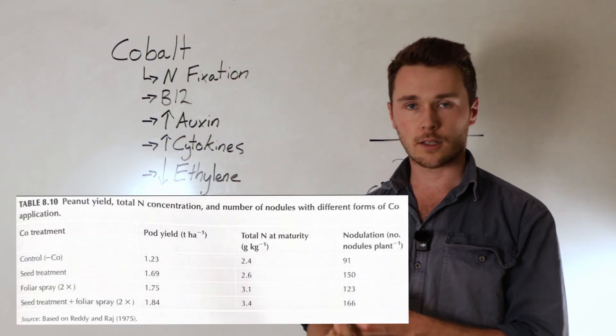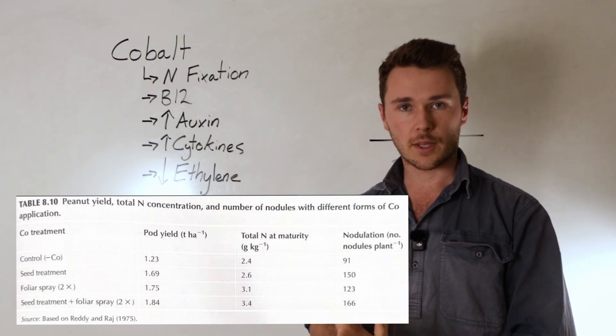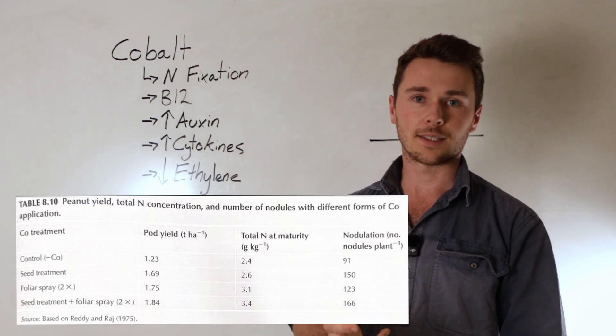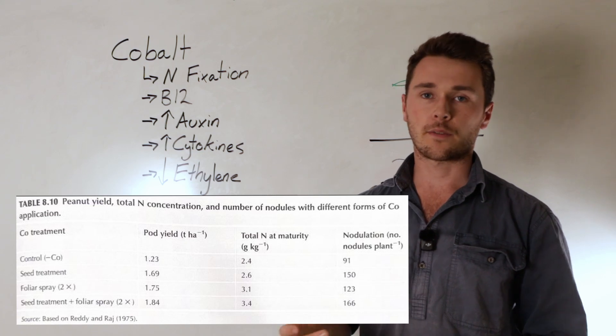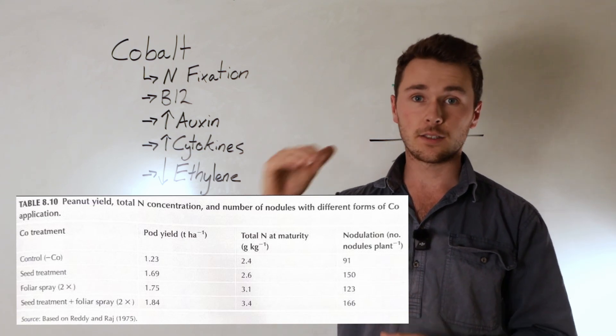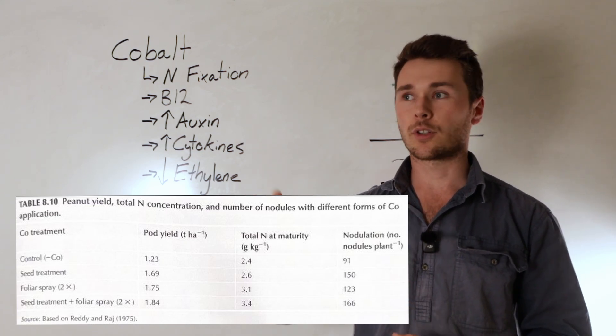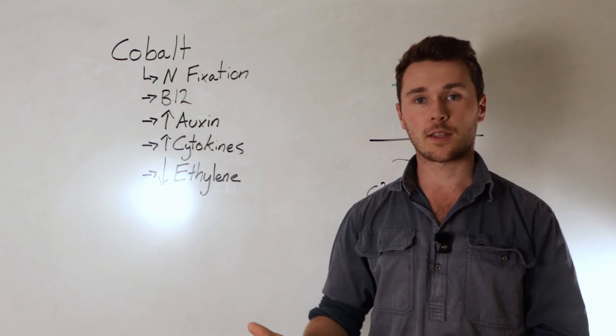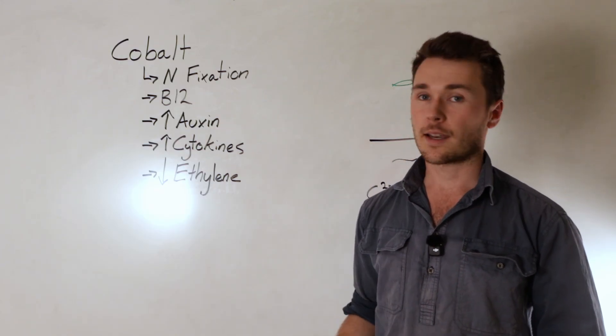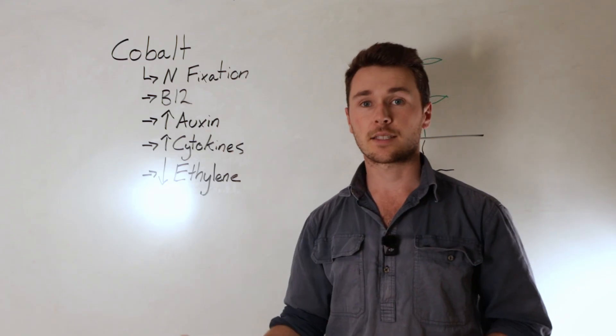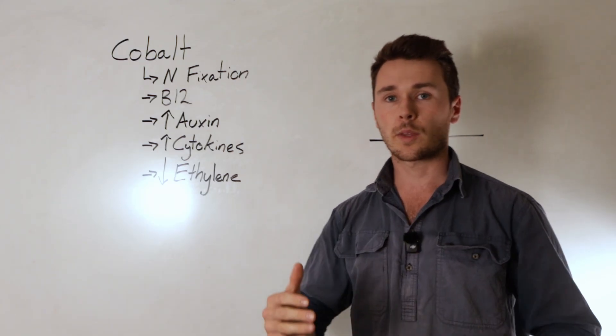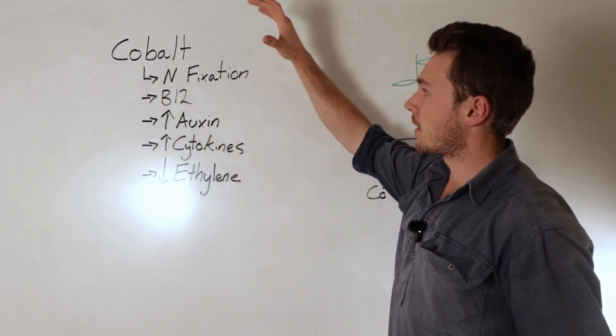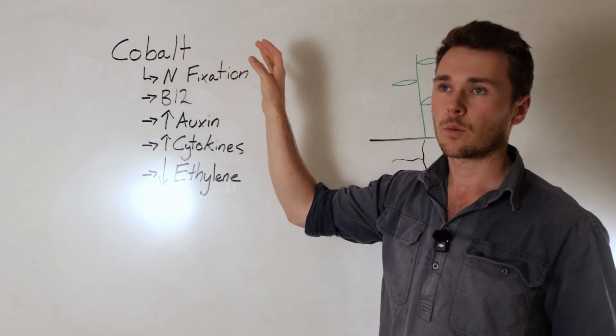And this was seen in a study with peanuts where they did a control, cobalt inoculated seed treatment, foliar applications, and the combination of foliars and seed treatments. What they found was a really nice increase in yield as well as total nitrogen at maturity and nodulation. So that's just with a simple addition of cobalt, wouldn't have been that expensive to get such a massive increase in yield.